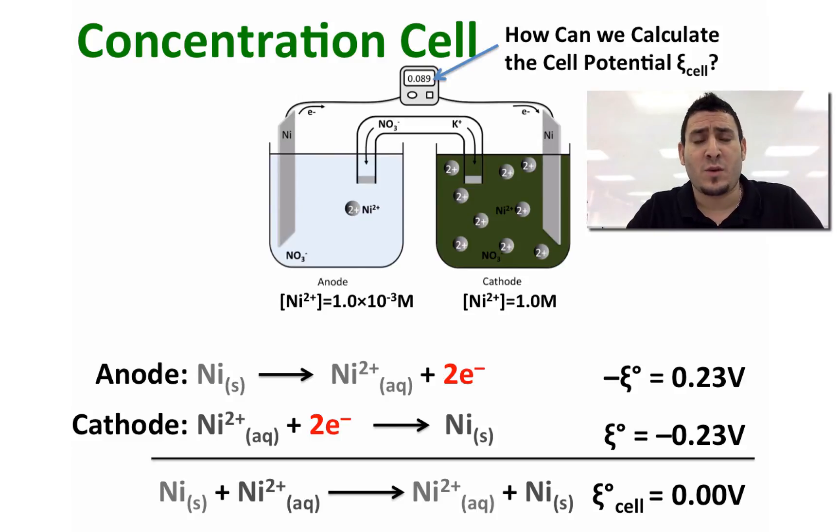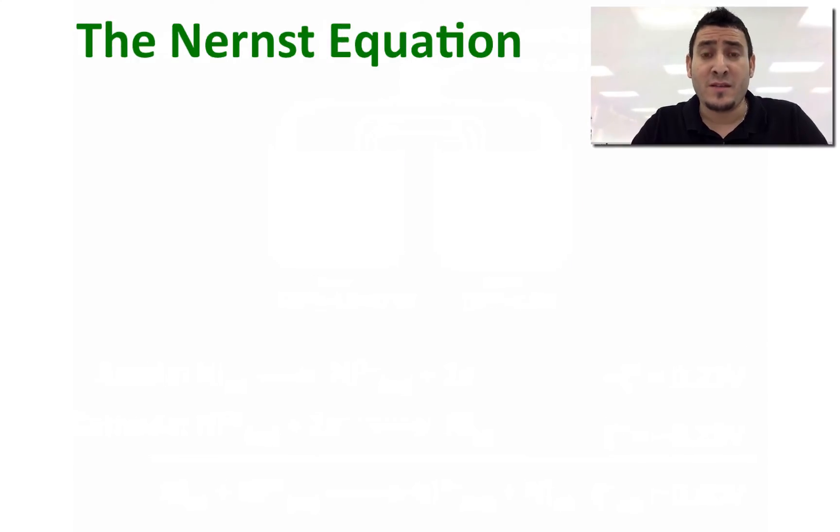Before answering this question, we need to discuss first the Nernst equation. The dependence of the cell potential on concentration results directly from the dependence of free energy on concentration. Recall from thermodynamics, ΔG = ΔG° + RT ln Q.